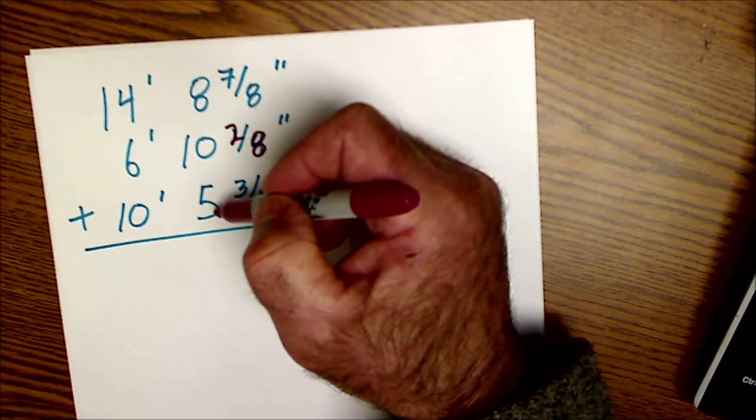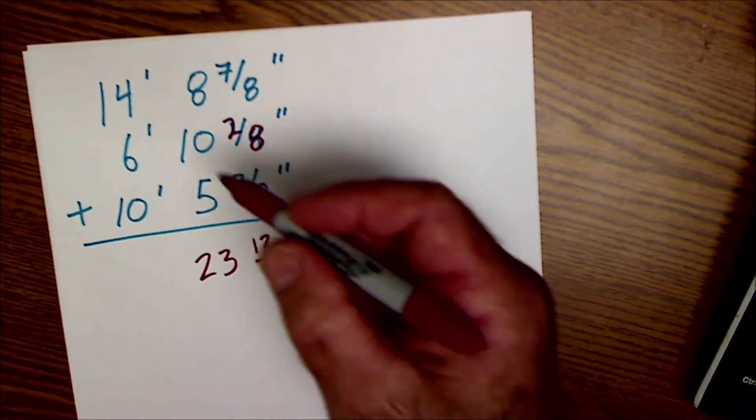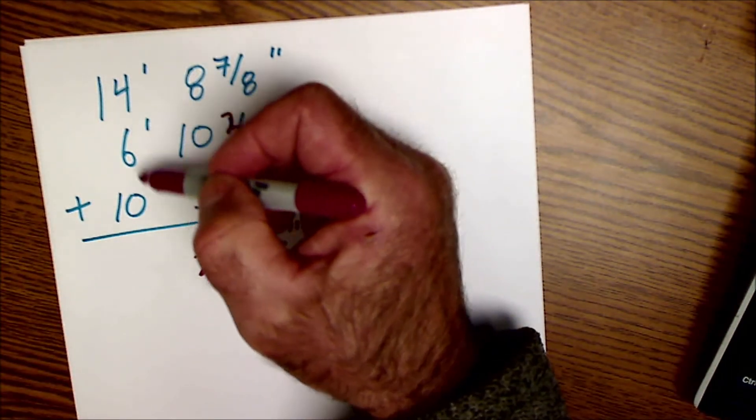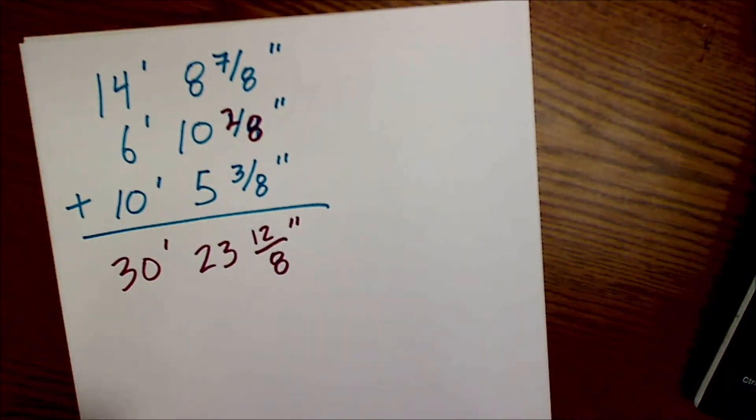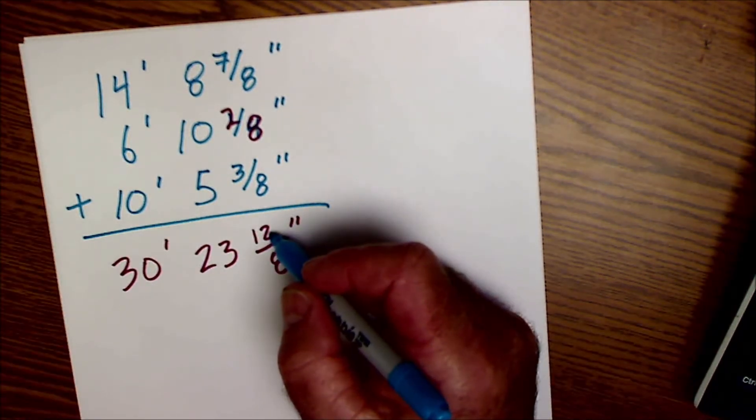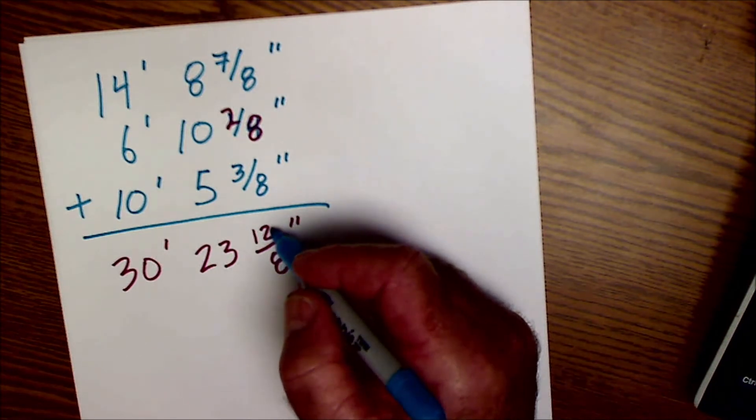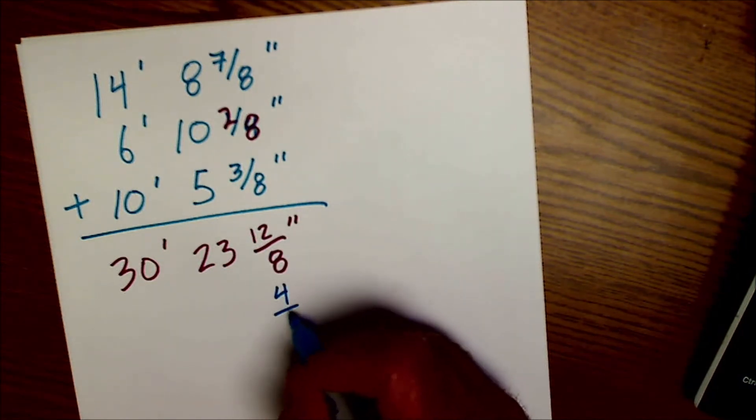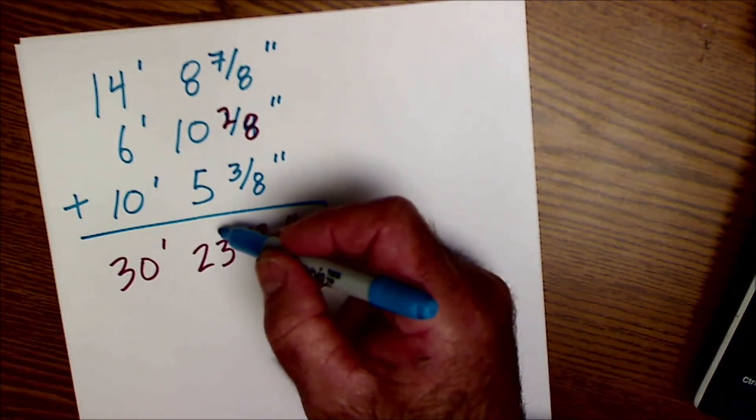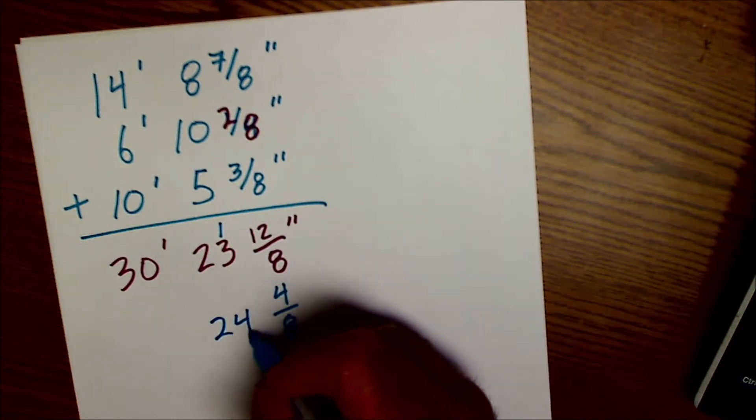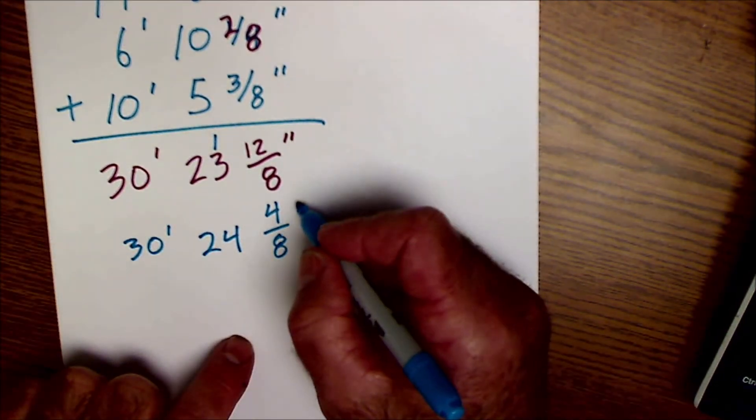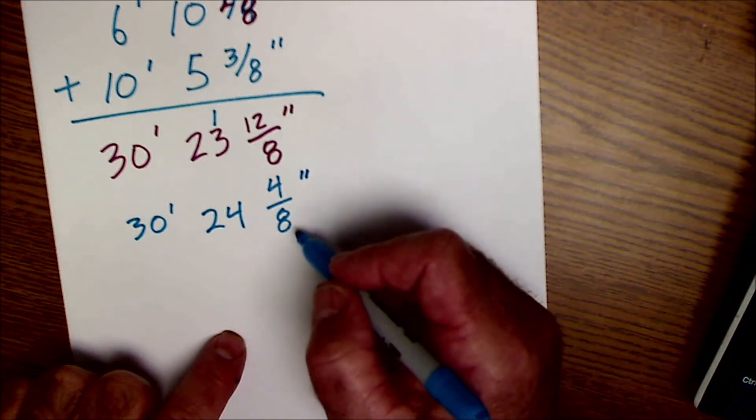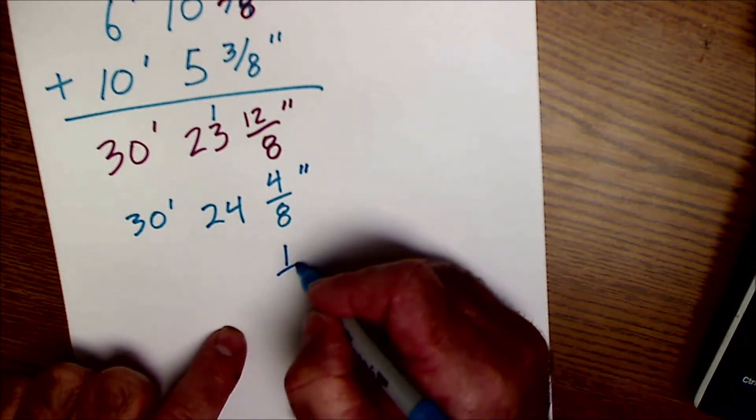Eight, ten and five is twenty-three. And here I have twenty, fourteen and six, twenty plus ten, thirty. So I have thirty feet, twenty-three and twelve eighths of an inch. So what I'm going to do with that twelve eighths, first thing I'm going to do is say eight goes into twelve one time with four left over. So I'm going to pull that eight out of this and I'm going to be left with four eighths. I took one of the eighths out, so that's going to go over here to give me twenty-four. And then I still have that thirty feet. So I have thirty feet, twenty-four and four eighths of an inch. And then that four eighths is now, I'm just going to reduce it to one half of an inch.